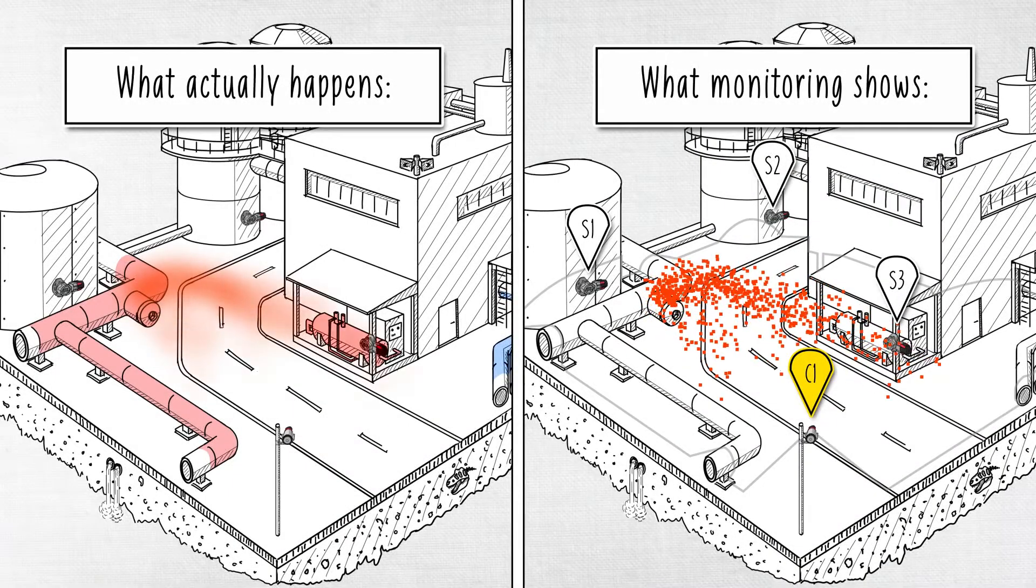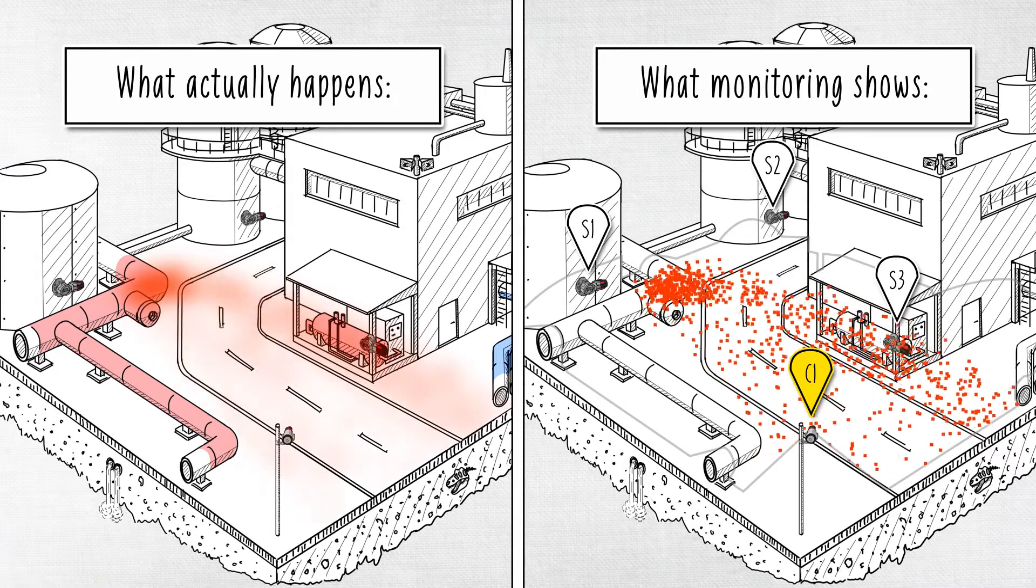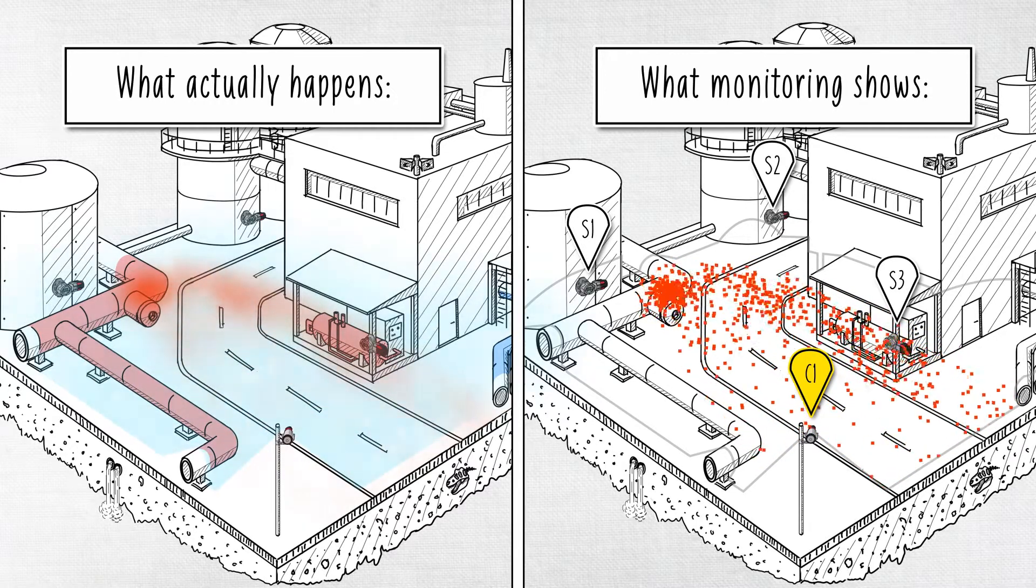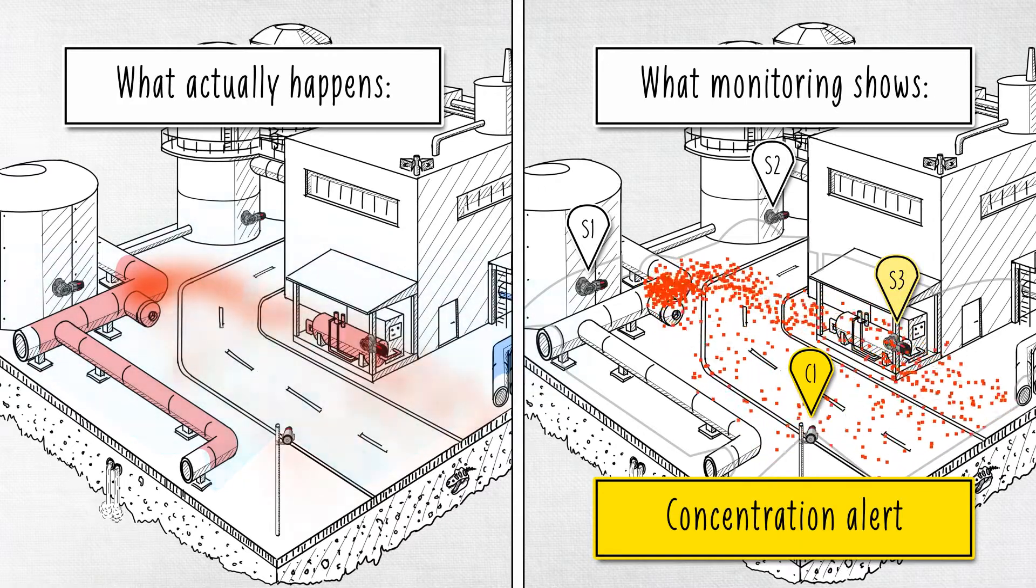METCAM functions like standard fixed gas detectors, producing local alarms based on set thresholds. The main difference is that the gas does not need to physically reach the unit.